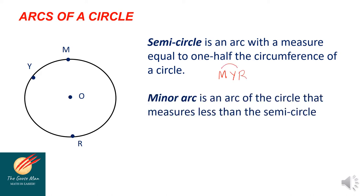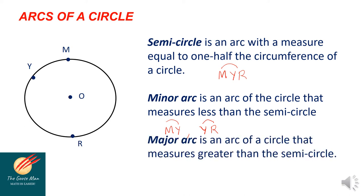Next, we have the minor arc. It is an arc of the circle that measures less than the semicircle. In this particular example, we can have arc M-Y as well as arc Y-R. This shows that the measure of arc M-Y is less than the measure of arc M-Y-R, as well as the measure of arc R-M-Y-R. Lastly, we have the major arc. A major arc is an arc of a circle that measures greater than the semicircle. In this example, we can have arc M-Y-R-Y.